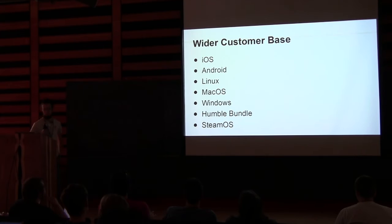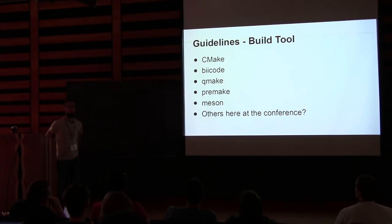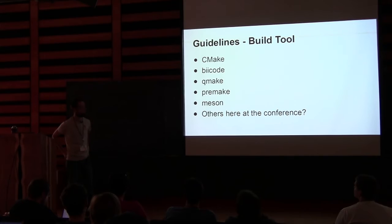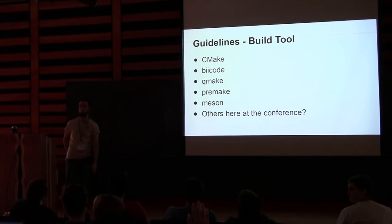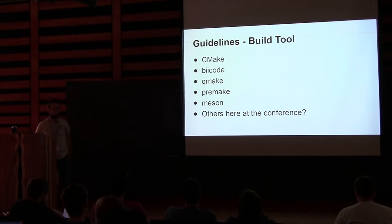Now we'll talk about some guidelines for how to make this whole process easier. Is everyone using some sort of build-generating tool — CMake or Bcode? Is anyone using plain make? That will definitely make it harder to support other platforms. CMake has lots of users here. Premake and Meson are ones I only recently became aware of, but they're similar to CMake in that they generate the project file appropriate for the platform you're compiling on. If you're not using a build tool, you are making your life harder than it should be.